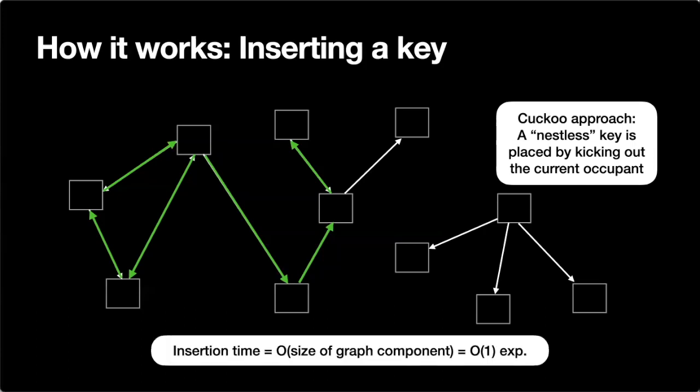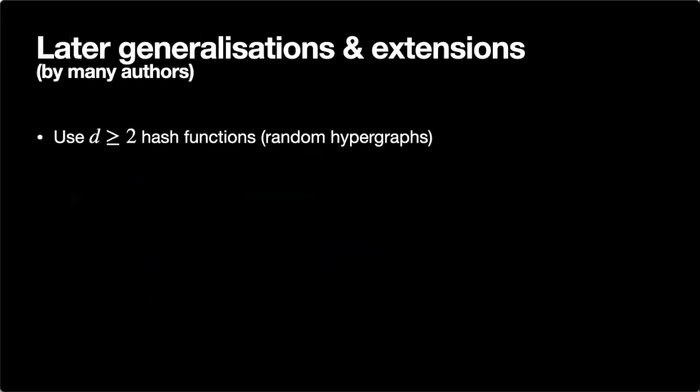What about the insertion time? It depends on the size of the component in the random graph. Under the same condition as before — that the graph is not too dense — the expected size of a connected component is going to be constant. So this is the basic cuckoo hashing published in 2001.